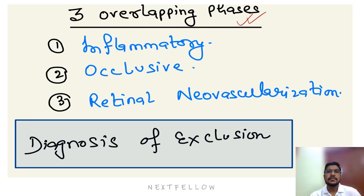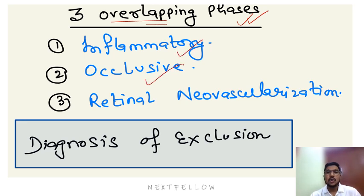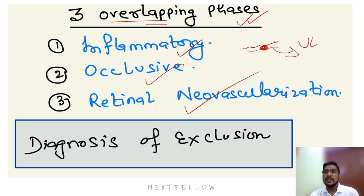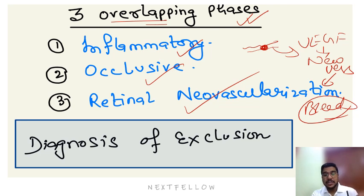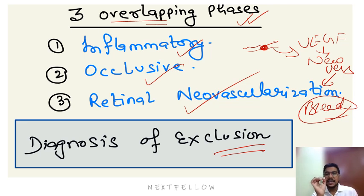The vasculitis causes inflammation first, which then causes occlusion of certain vessels. This occlusion gives rise to vasoproliferative stimulation, forming immature new blood vessels — retinal neovascularization. These new vessels are very fragile and will bleed easily. In the same eye you can see all three overlapping stages simultaneously. Since it can mimic other conditions, Eales disease is a diagnosis of exclusion.